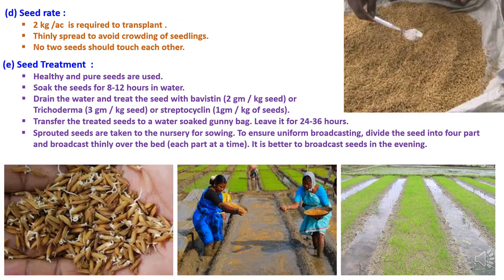The fourth step is seed rate. Seed rate used is 2 kg of seeds per acre. Seeds should be thinly spread on the seed bed to avoid crowding of seedlings, and care should be taken that no two or more seeds touch each other. If seeds are densely spread, it will result in weaker seedlings and create problems during uprooting at transplanting.